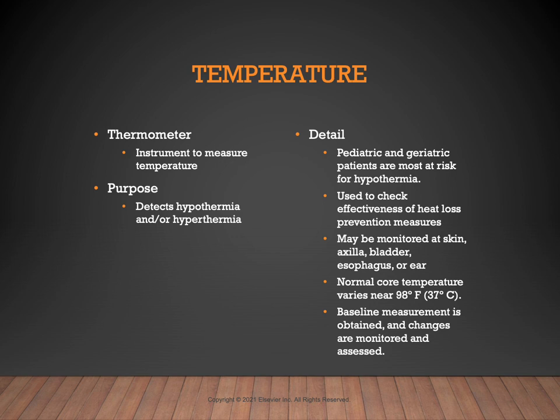Normal body temperature is typically 98 degrees Fahrenheit or 37 degrees Celsius. If the core temperature falls below 36 degrees Celsius, we start to worry about hypothermia. Hypothermia alters many of the body's functions and increases the risk of surgical site infection. This is why we take measures to minimize heat loss such as using forced air warmers, warm blankets, and even warm irrigation.